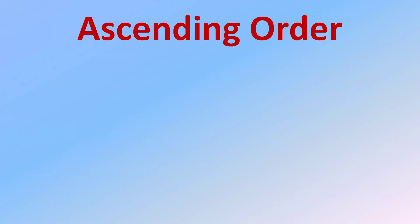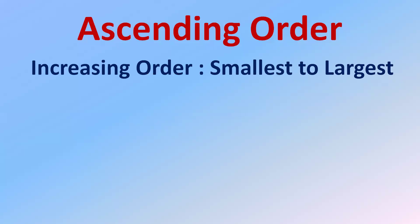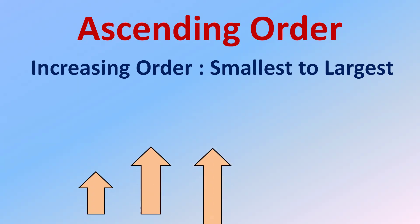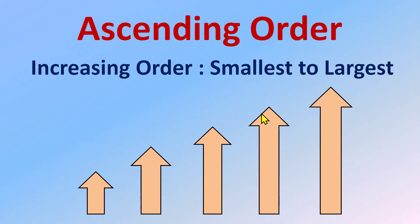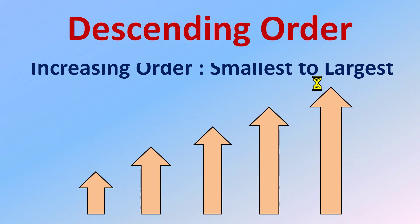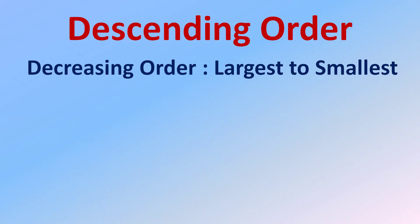First, let's understand what ascending order is. Ascending order, also called increasing order, means moving from smallest to largest. You can see with the help of this visual picture — the arrow is growing slowly, moving from the smallest to the largest. That is ascending order, or increasing order: smallest to largest.